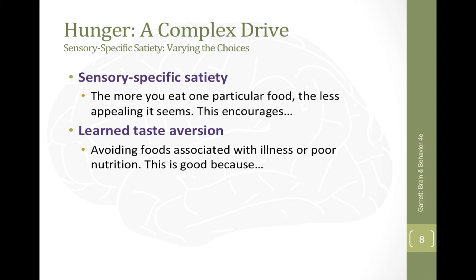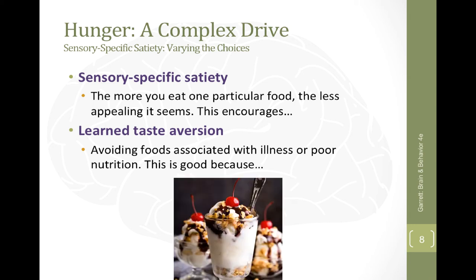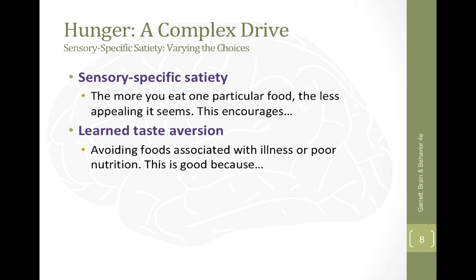There is something called sensory specific satiety. This is not about being full because you've eaten enough in general — what it actually refers to is that we get full for a particular type of food. If something else is available, we might have appetite for that. For example, if you eat something soft and get full of it, something crunchy might still sound good. Or if you're eating something salty or savory and have had enough of that, something sweet might still be appealing. Sensory specific satiety means we get satiated — satisfied — as we eat more of one thing, but that fullness is specific to that one item.